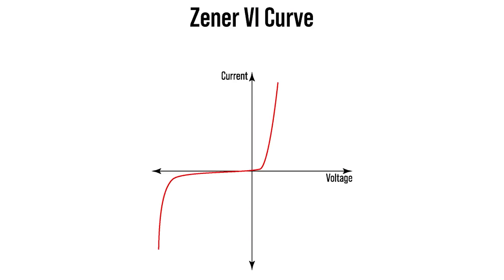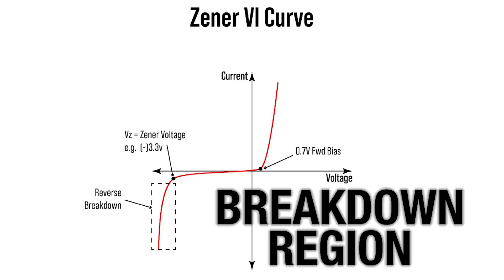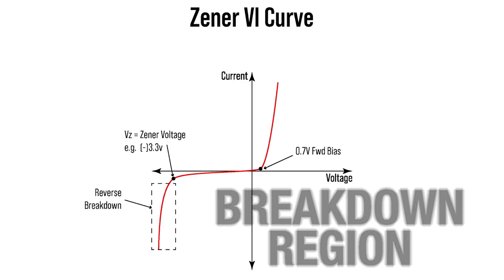A Zener diode has an interesting VI curve characteristic. When forward biased, the diode begins conducting at around 0.7 volts, just like the 1N4148. However, if we reverse bias the diode and apply enough voltage, we enter into what is known as the breakdown region. It's a scary name, but this vertical slope is actually where we want to operate.